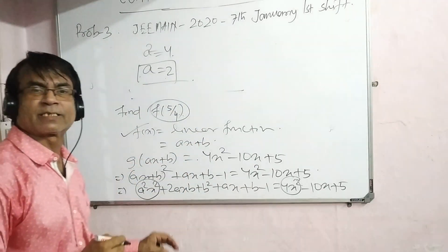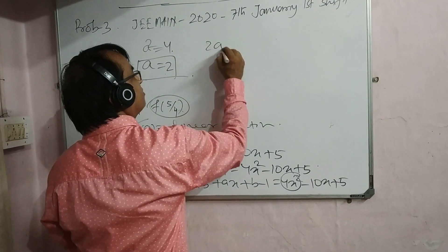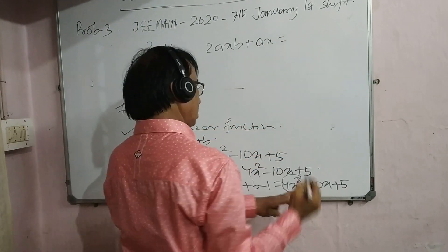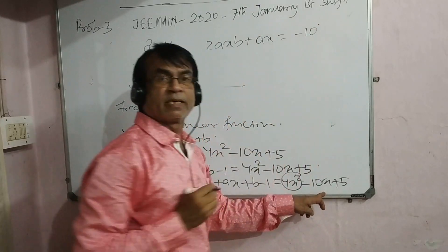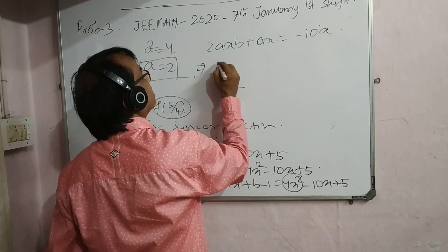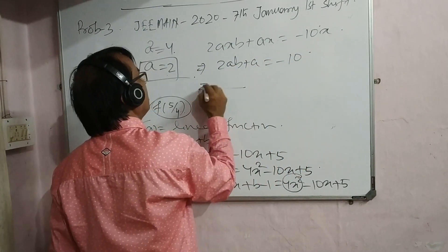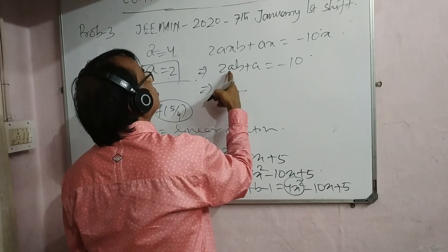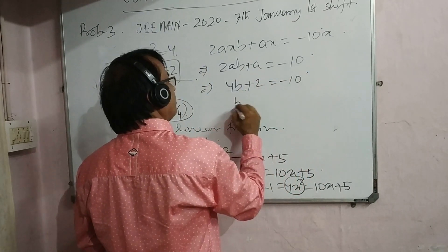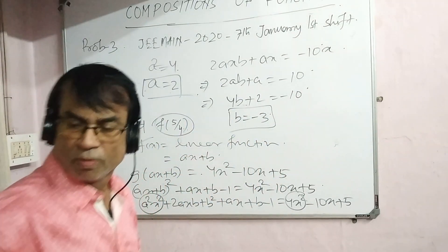Now comparing coefficients of x on both sides: 2ab + a = −10. Since a = 2: 4b + 2 = −10, so b = −3. Therefore a = 2 and b = −3.